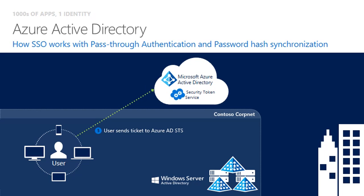The ticket is then passed to Azure AD cloud where it is validated, ensuring that the username that was entered matches the Windows security identifier, SID, within the Kerberos ticket. If they match, a token is returned back to the user, allowing them to access the resource. If the resource requires additional proofs such as MFA, those are initiated. And that's how SSO works with Azure AD pass-through authentication or with password hash synchronisation.